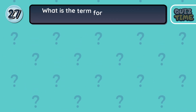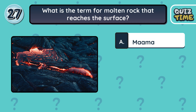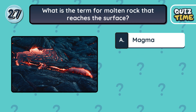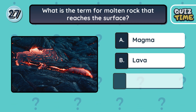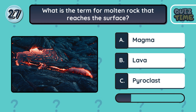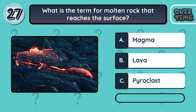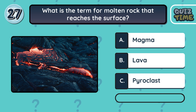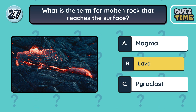Number 27. What is the term for molten rock that reaches the surface? A. Magma. B. Lava. C. Pyroclast. The correct answer is B. Lava.